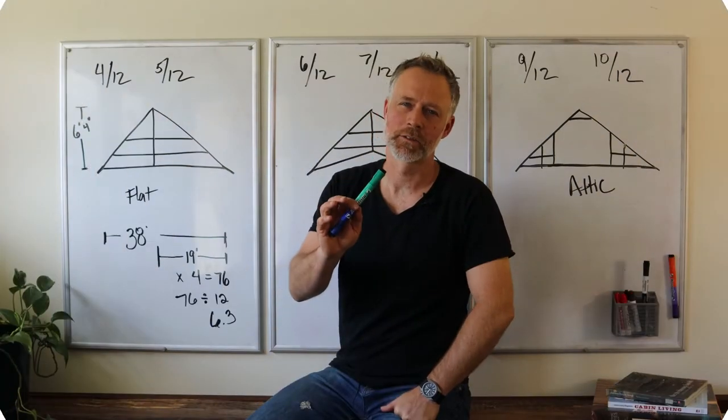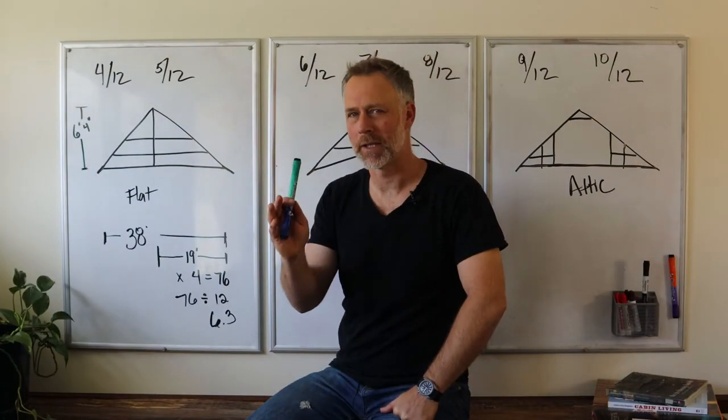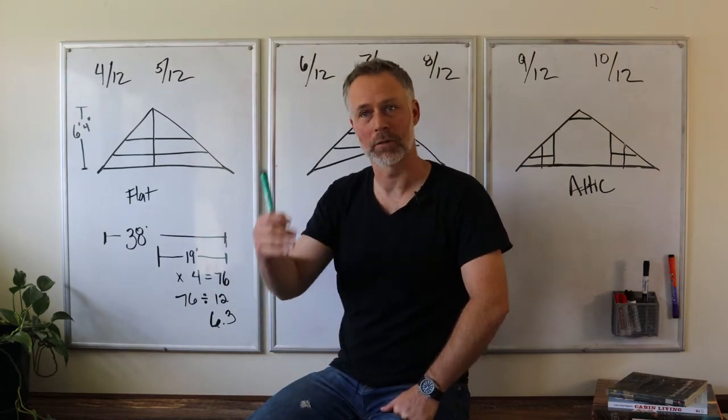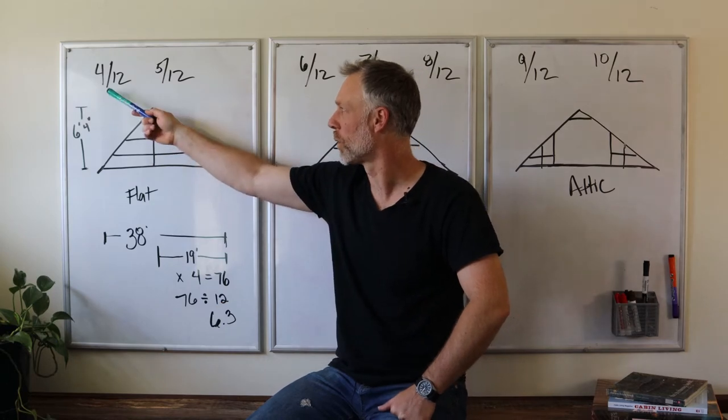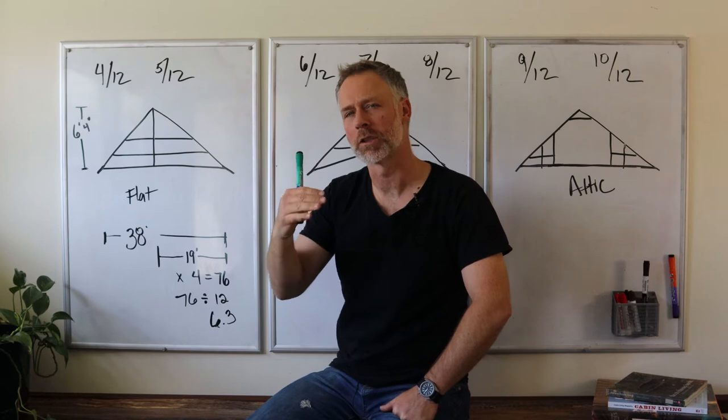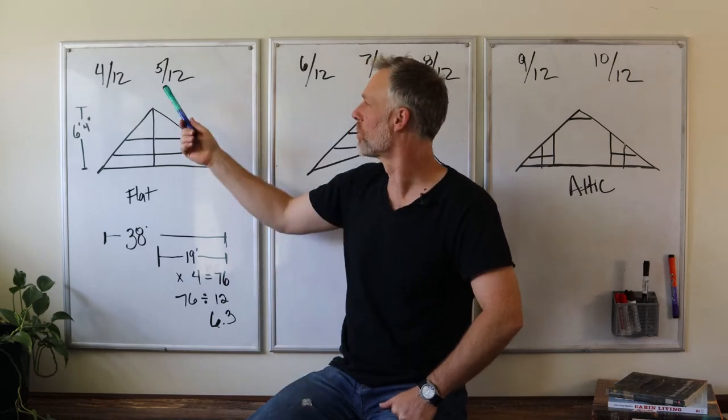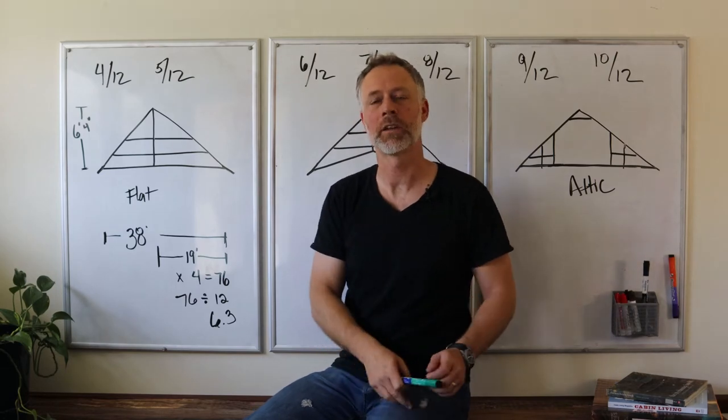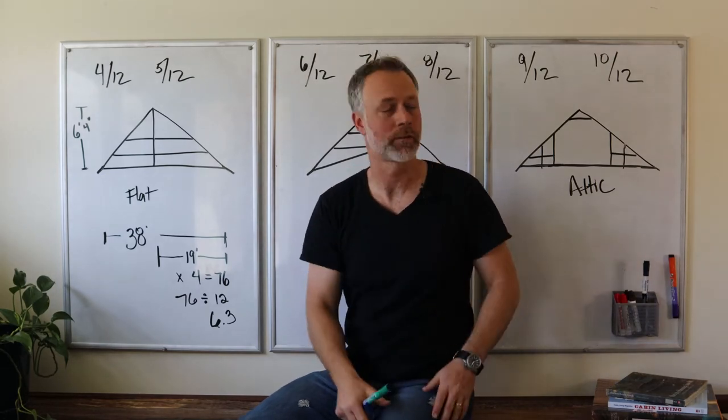Let's start with the pitch of the roof. We've got lots of options. If you want a flatter roof, you're going to be talking about what's called maybe a 4/12. You can't go much lower than a 4/12, but you'll hear people use these numbers frequently: 5, 6, 7/12.